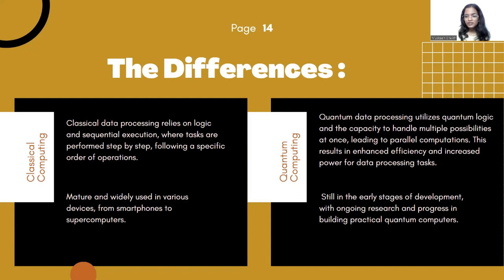Classical computing is mature and widely used in various devices from smartphones to supercomputers, whereas quantum computing is still in its early stages of development, with ongoing research and progress in building practical quantum computers.